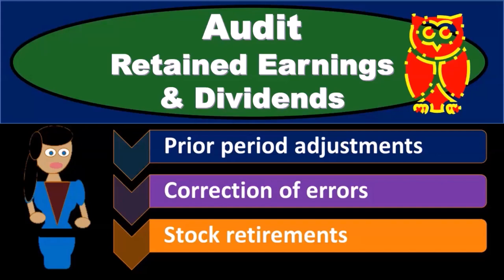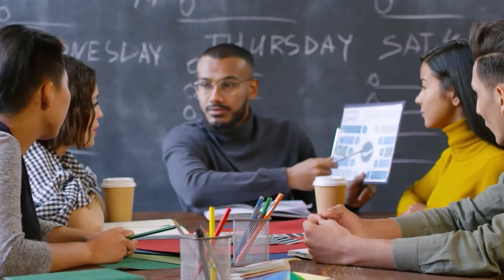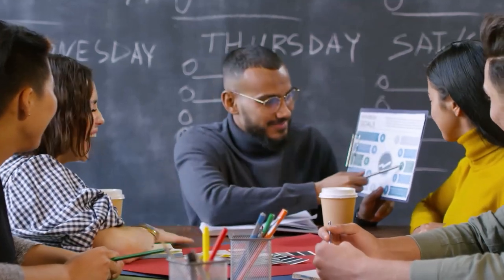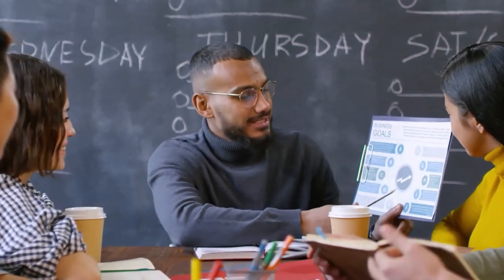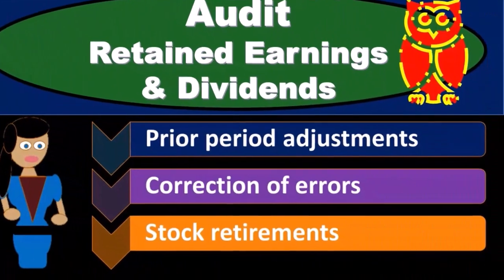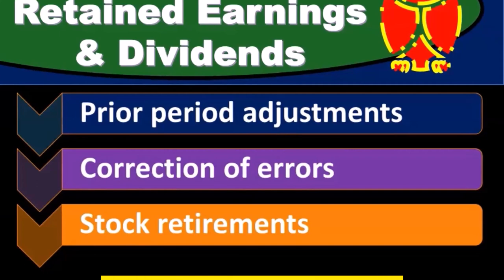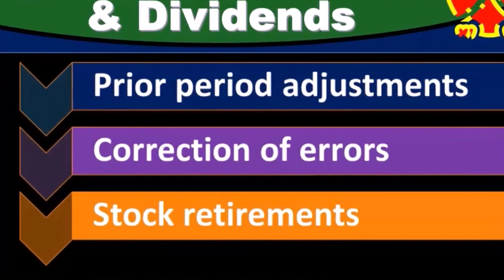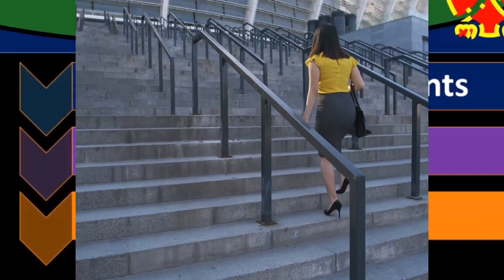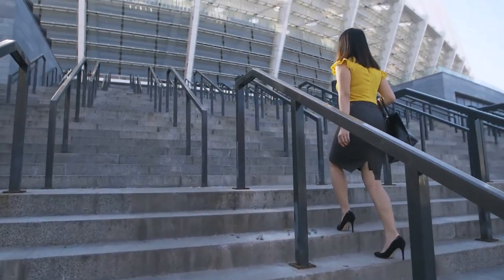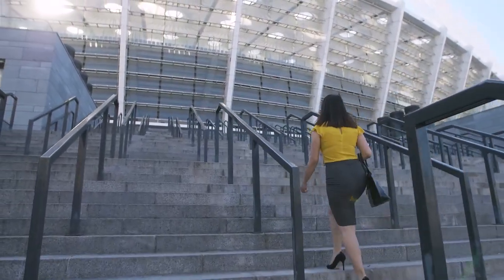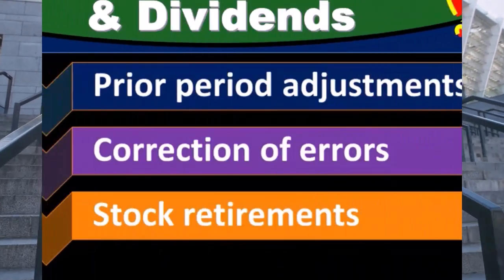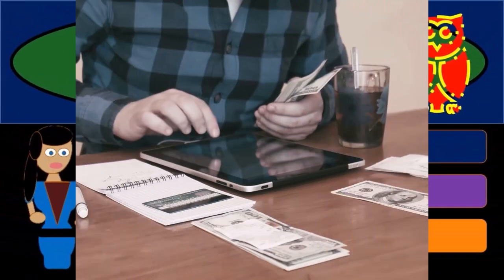In this presentation, we will take a look at the audit process related to retained earnings and dividends. Retained earnings is in the equity section of the balance sheet — it's the accumulation of earnings over time. When we close out the income statement, net income increases retained earnings, and a loss would decrease it.